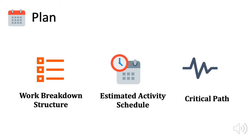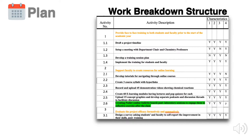In the plan phase, the most important parts are work breakdown structure, activity estimate time, and the critical path. Our team uses work breakdown structure to break each learning objective into small, manageable tasks. For example, we break activity 1 into four steps: draft a project timeline, set up a meeting with department chair, develop a training session plan, and implement a training.